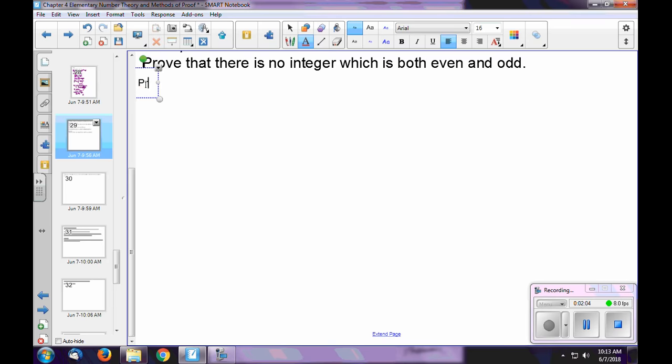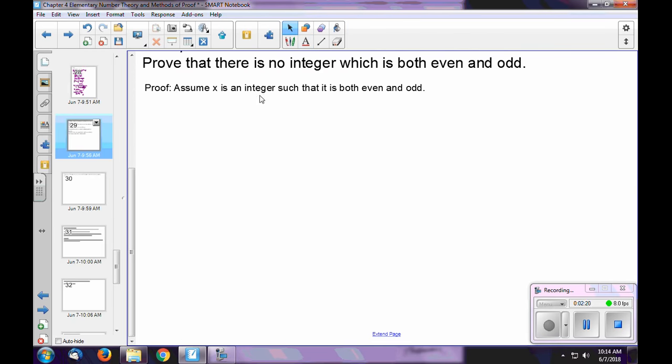So to prove this, let's make a statement. Let's assume that x is an integer such that it is both even and odd. So we're making that statement that it has these same properties. Remember, we know it's false. You've verified this, you've thought about this before you ever make that statement. Now if we can show that when we make this assumption, things break down, that's what we're working towards in a proof like this.